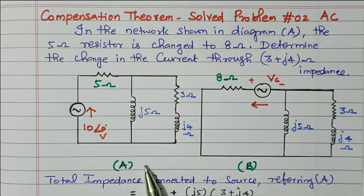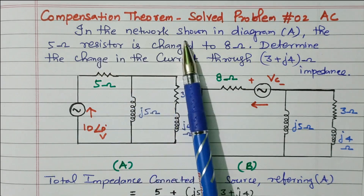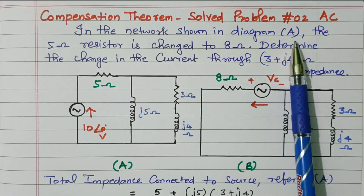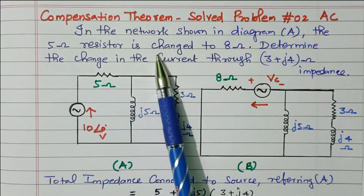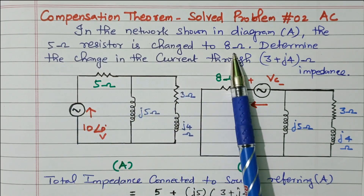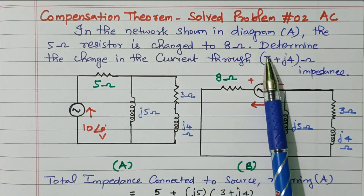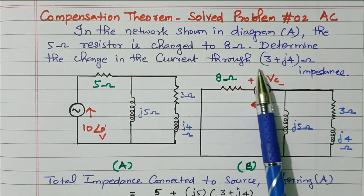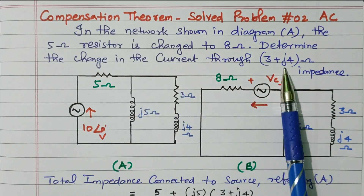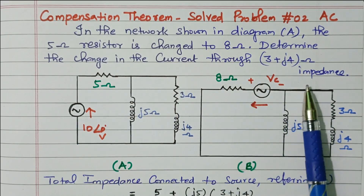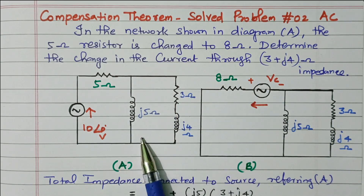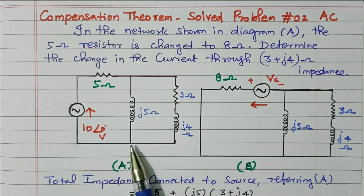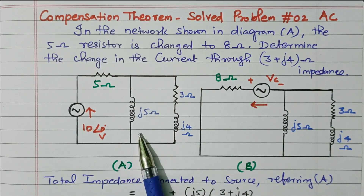Now we will go to the problem. In the network shown in diagram A, the 5 ohm resistor is changed to 8 ohm resistor. We need to determine the change in current through the 3 plus J4 ohm impedance. So there are two networks available: network A and network B. This is the original network.